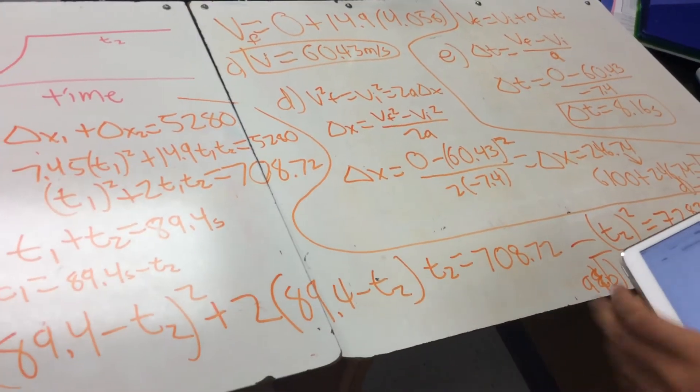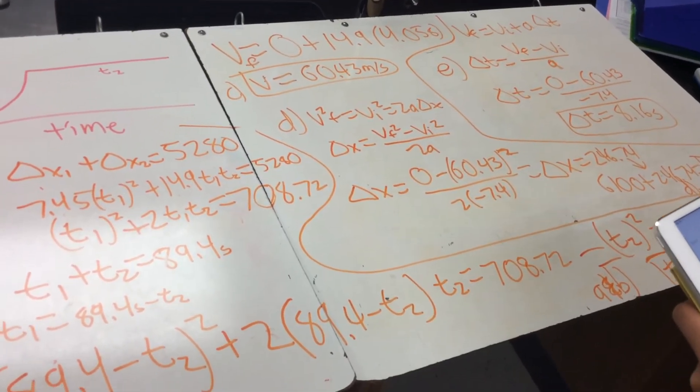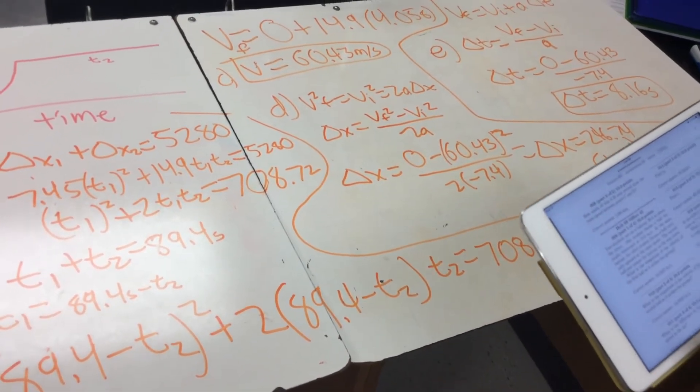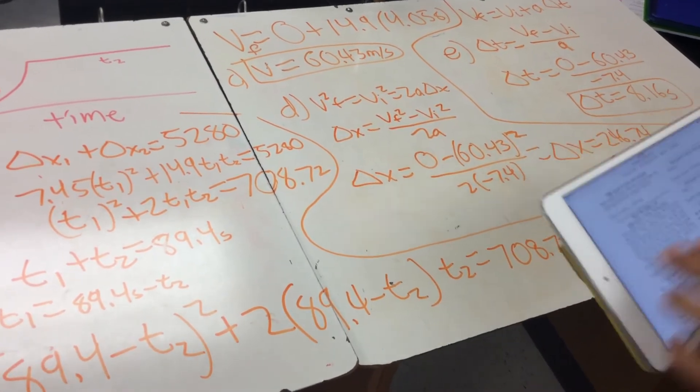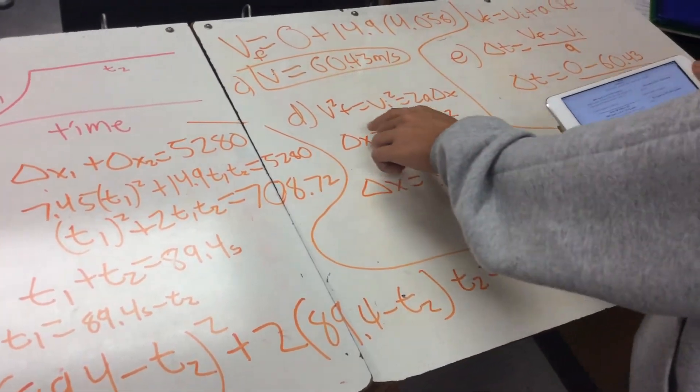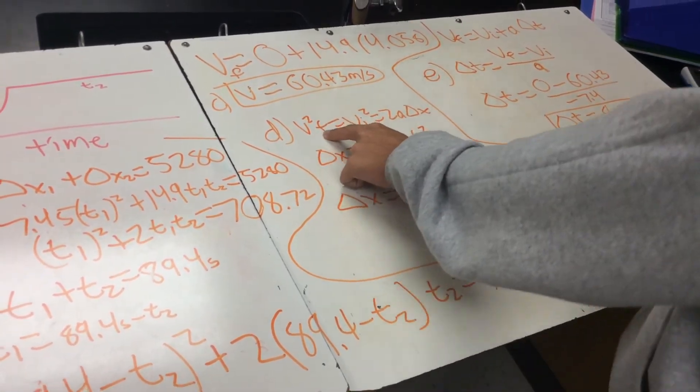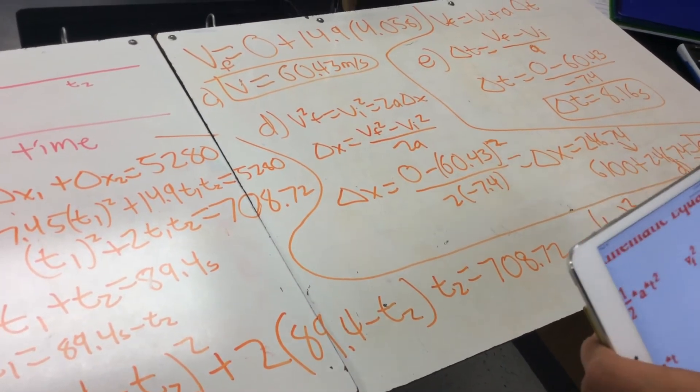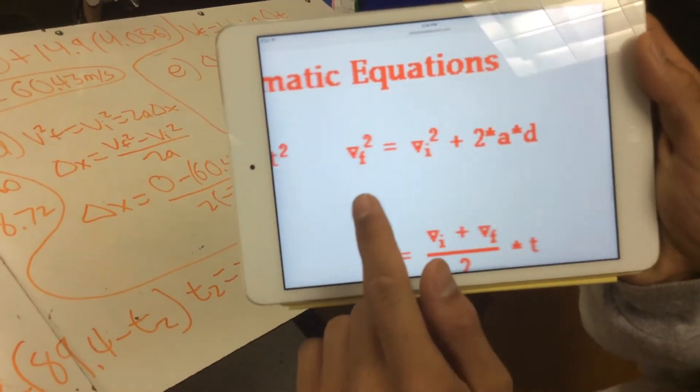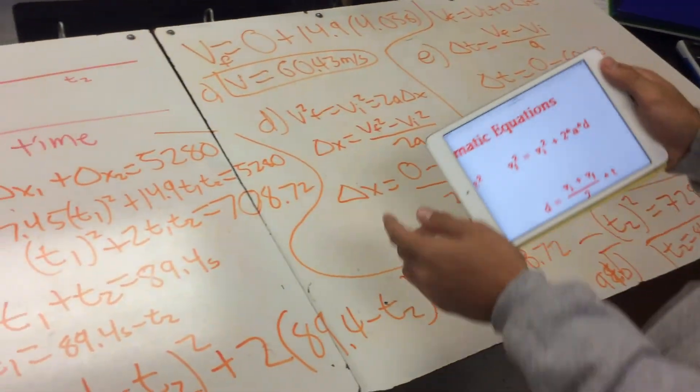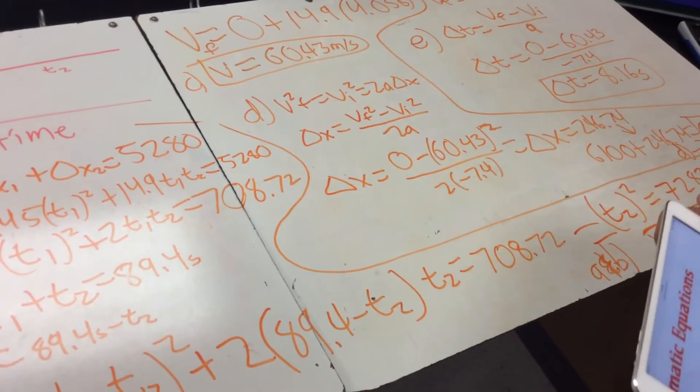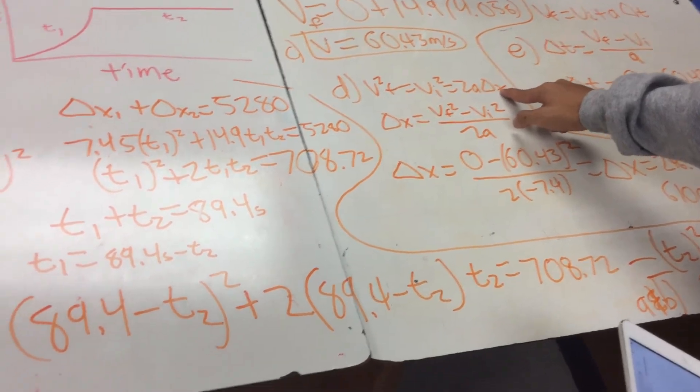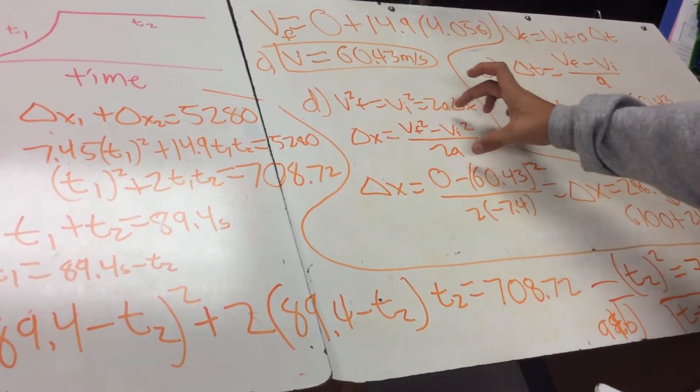And then part D, part D asks, what is the final position of the sled when it comes to rest after it decelerates at 6,100 meters? So you're going to use this kinematic equation. And what you'll do is, since we need to find the displacement, how far it went, you'll isolate delta x. So when you isolate delta x, you'll get this equation.